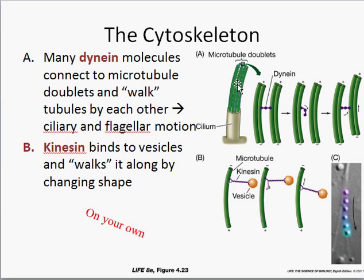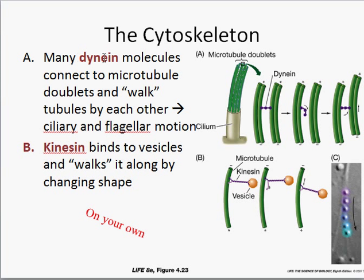The motor proteins are called dynein and kinesin, and they help with movement related to microtubules. Dynein connects two microtubules in the cilia — as it moves, it causes the microtubules to move, and when they move back and forth, it causes the cilium to sway back and forth. Kinesin is a motor protein that walks along microtubules inside the cell, carrying transport vesicles with it, helping things move inside the cell — and it requires energy. You can think: dynein is dynamic, so movement; kinesin is kinetic, also related to movement.